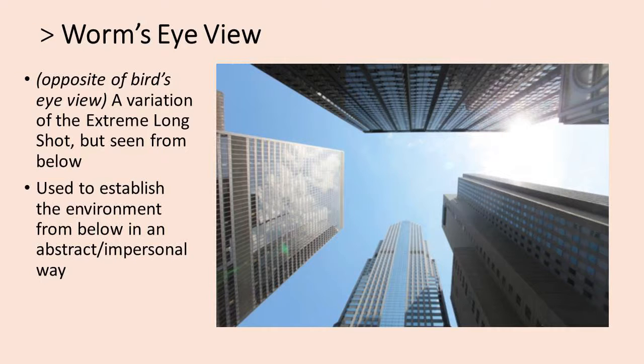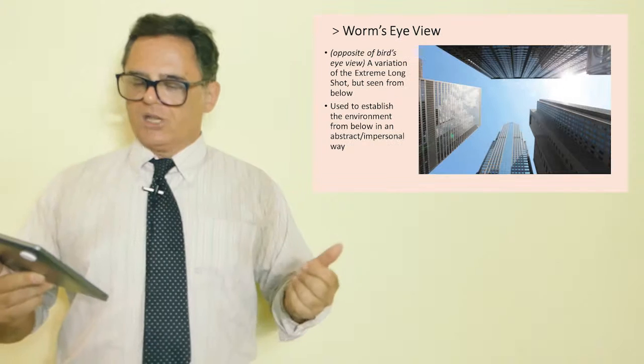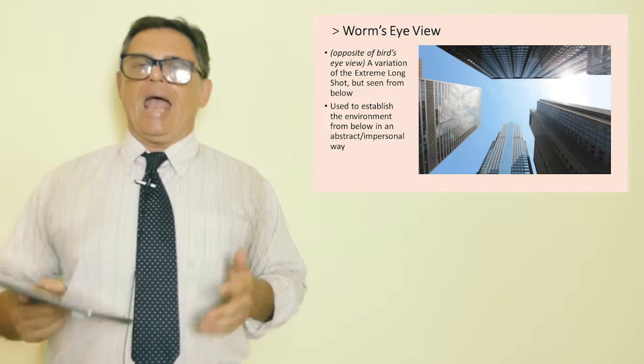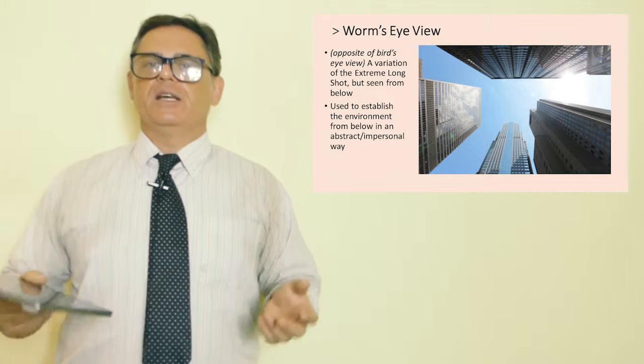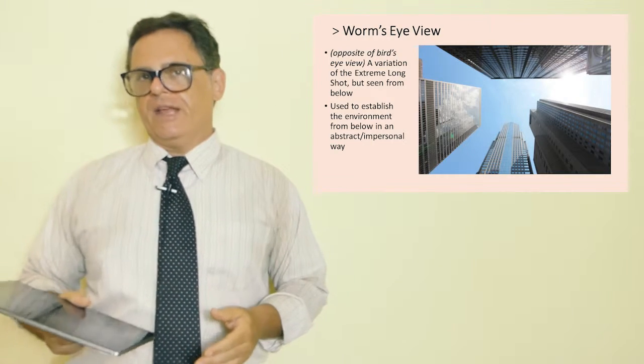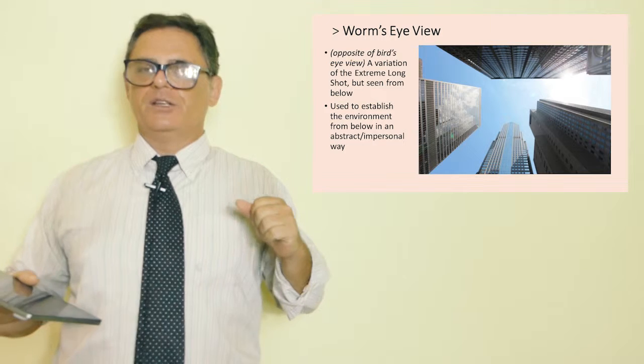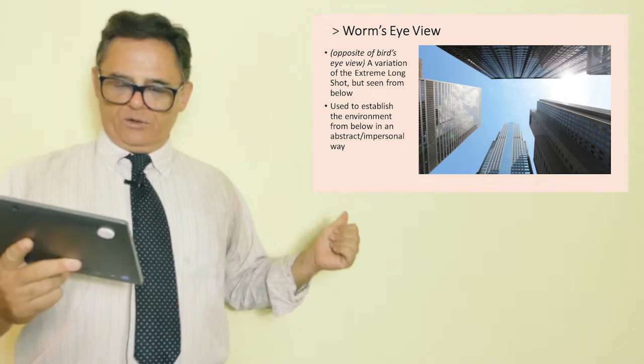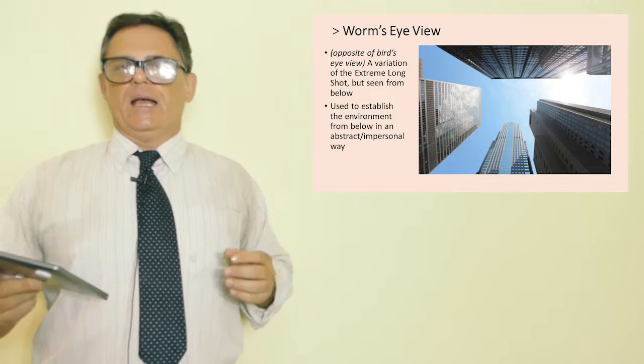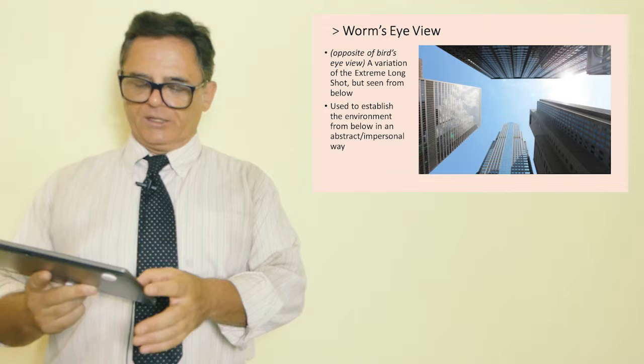The cousin or relative of the bird's eye view is the worm's eye view, and it's basically the opposite. It's in a variation of the long shot or extreme long shot, but seen from below. So here, the example is skyscrapers seen from below, looking up at skyscrapers. Again, it's designed to establish the environment in an abstract, almost impersonal way. Basically because in our normal everyday lives, we tend to look at things with a neutral perspective. That's why the eye level camera is considered neutral. And this is not neutral. This is definitely creating an abstraction out of everyday reality. And that's an aesthetic choice.